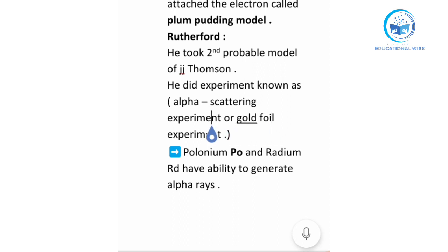He gave one point that polonium and radium have ability to generate alpha rays. Now we will also make a diagram of this one and then understand how this happens, that he took the second probable model of J.J. Thomson. So let's move further.